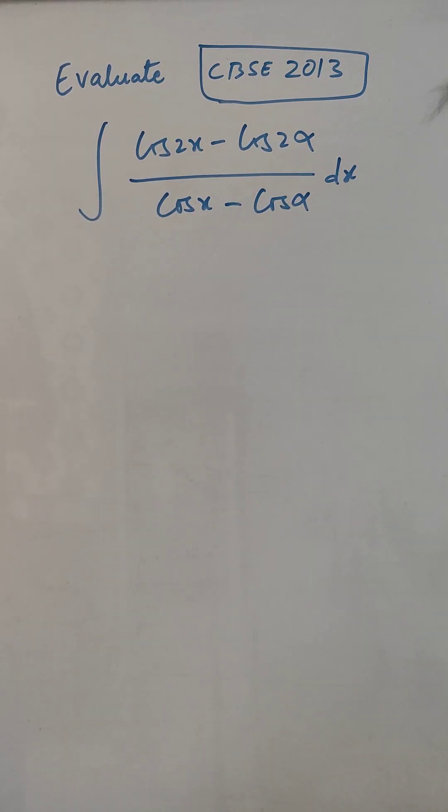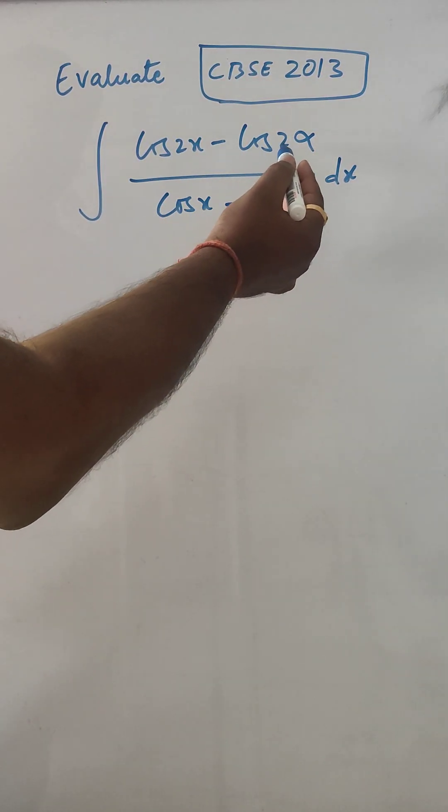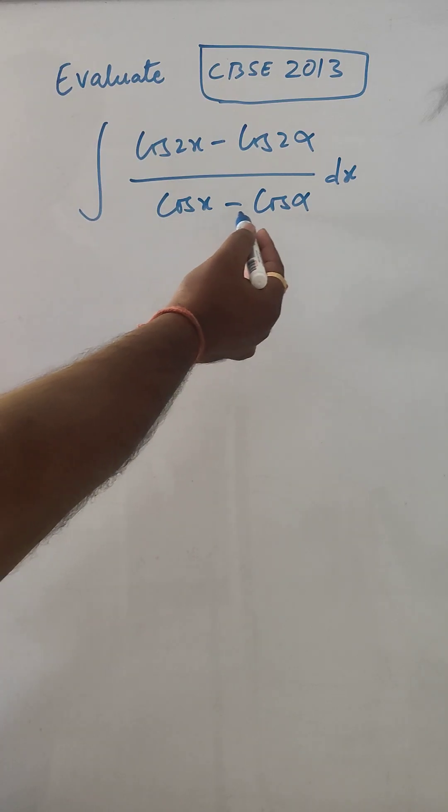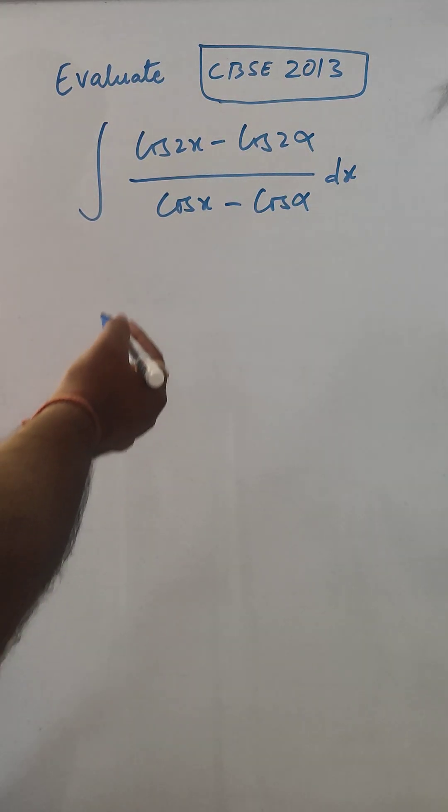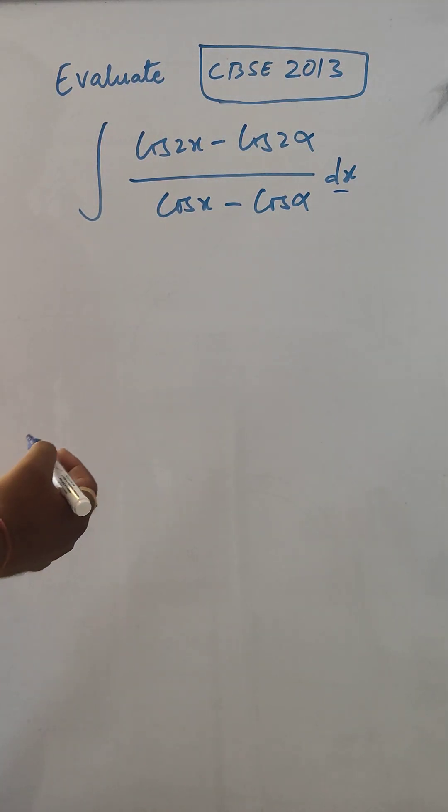This is an indefinite integral problem: the integral of (cos 2x - cos 2α) divided by (cos x - cos α) dx. This integration is in terms of dx.